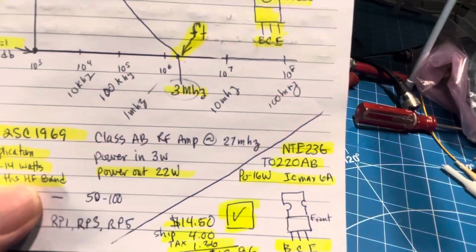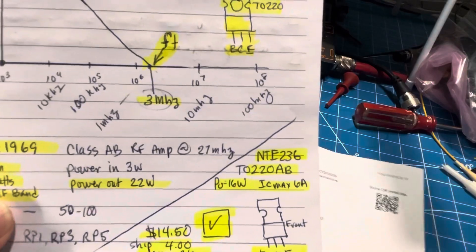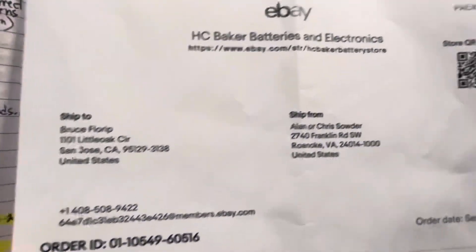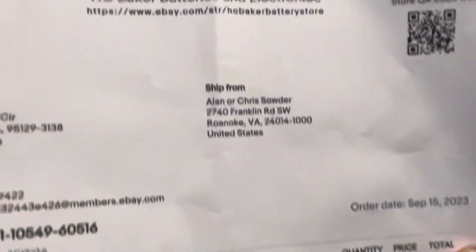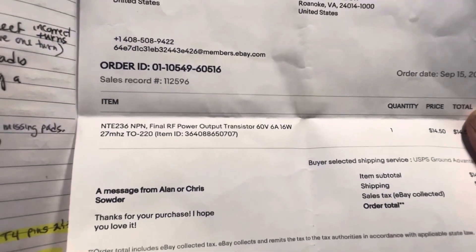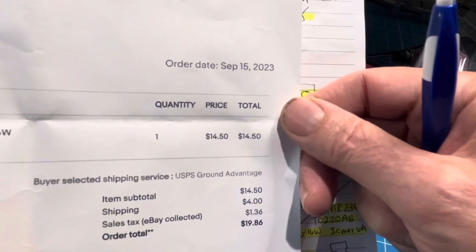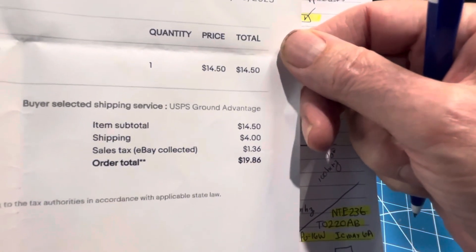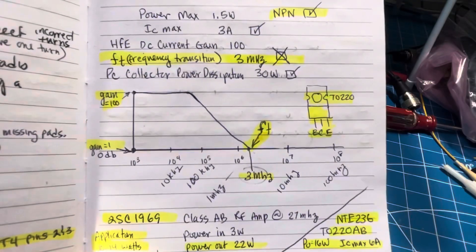I did just today receive in the mail from a good seller, H.C. Baker Batteries and Electronics. We got the NTE 236 for a pretty good price of $14.50, but then it cost me $4 shipping, $1.36 for tax, so I ended up paying $19.86 for a new output transistor.